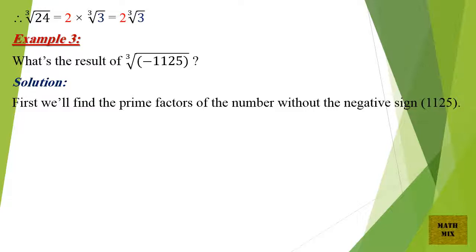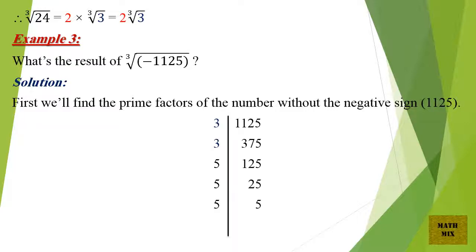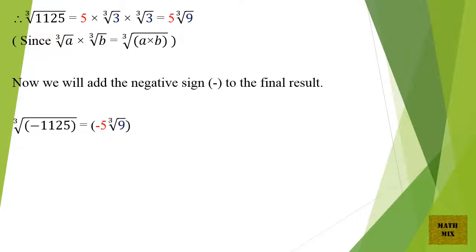Example 3: What's the result of the cube root of minus 1125? Solution. First we'll find the prime factors of the number without the negative sign. Therefore, the cube root of 1125 equals 5 times the cube root of 3 times the cube root of 3, which equals 5 cube root of 9, since the cube root of a times the cube root of b equals the cube root of a times b. Now we will add the negative sign to the final result. The cube root of minus 1125 equals minus 5 cube root of 9.